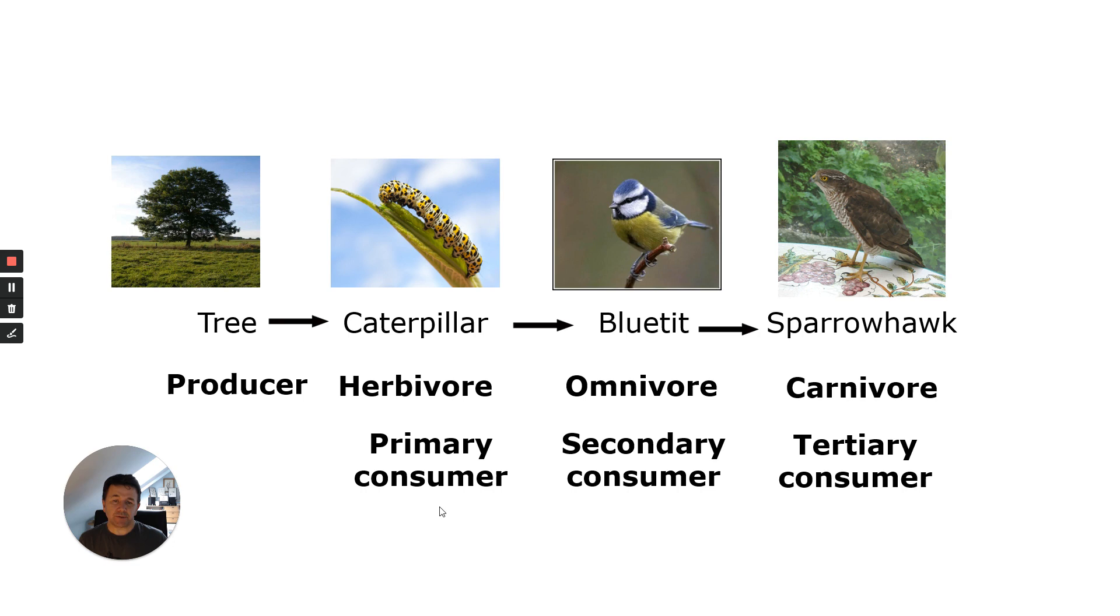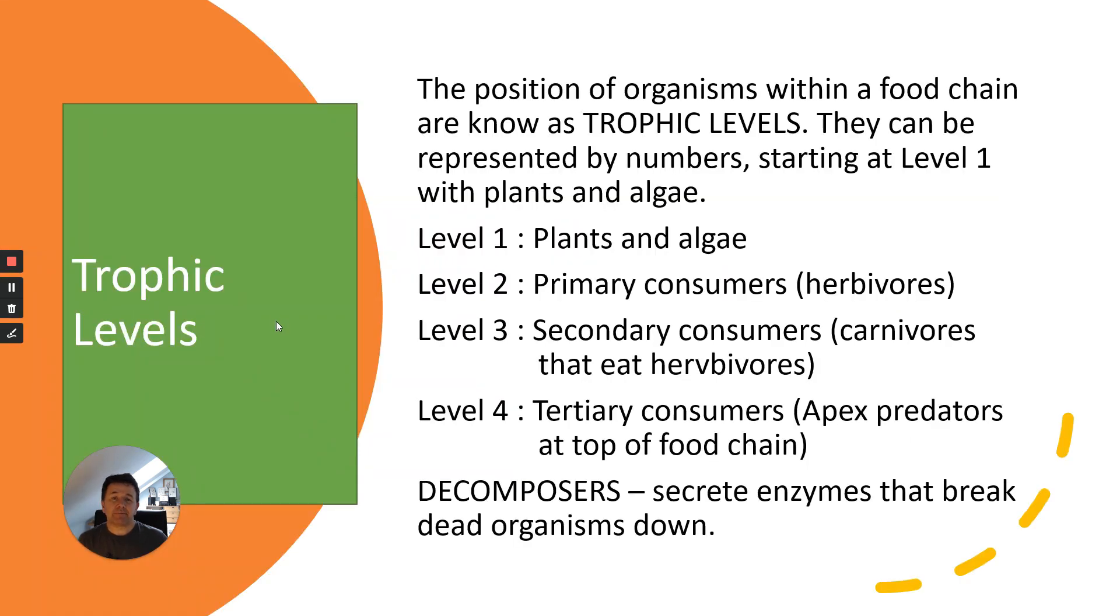You start with a producer and go through the different consumer levels, and these are known as trophic levels. Trophic levels is the position of organisms within a food chain. They can be represented by numbers. Level one can be plants and algae, which are producers.